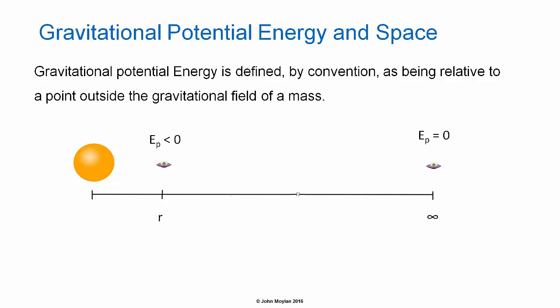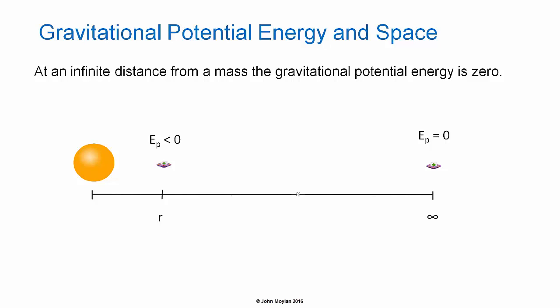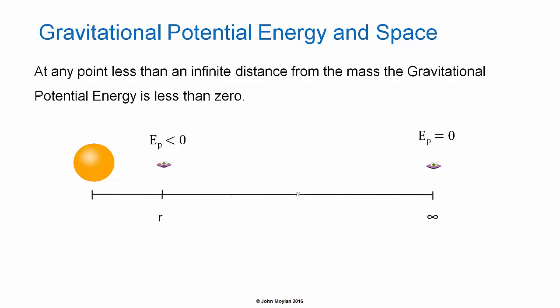The mass whose Gravitational Potential Energy we are considering is the little spaceship. When the center of mass of the little spaceship is at an infinite distance from the center of mass of the star, its Gravitational Potential Energy is zero by definition. When the center of mass of our little spaceship is at any distance less than infinity from the center of mass of the star, the Gravitational Potential Energy is less than zero. So just as the Gravitational Potential Energy of a box sitting on the surface of the Earth is equal to zero if we define it relative to the surface of the Earth, and if we push the box into a hole the Gravitational Potential Energy is going to be less than zero — in space, defining Gravitational Potential Energy as being zero at infinity means that for any distance less than infinity, the Gravitational Potential Energy is going to be less than zero.